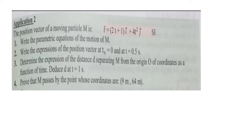First, substitute t0 equals 0 in the equation of r to get r0, and then substitute t equals 0.5 seconds to get r at t equals 0.5 seconds. In part 3, you are asked to determine the expression of the distance d separating m from the origin o, which is the norm of the vector om at any time t, equal to the radical of x squared plus y squared, and then deduce d at t equals 1 second. In part 4, you should prove that m passes by the point whose coordinates are 9 meters and 64 meters.